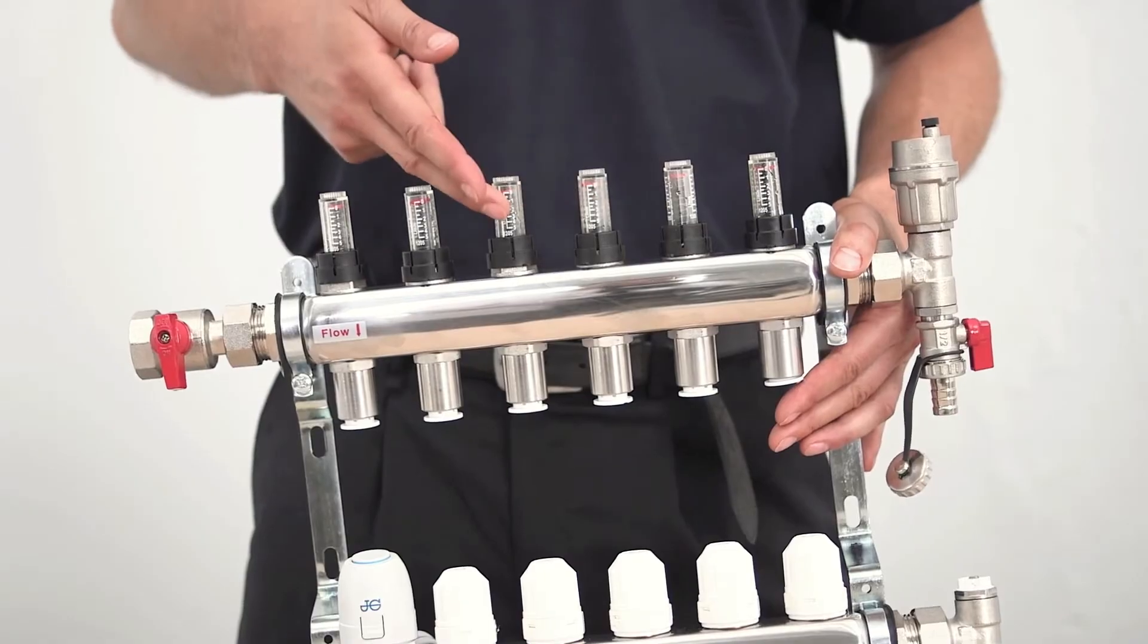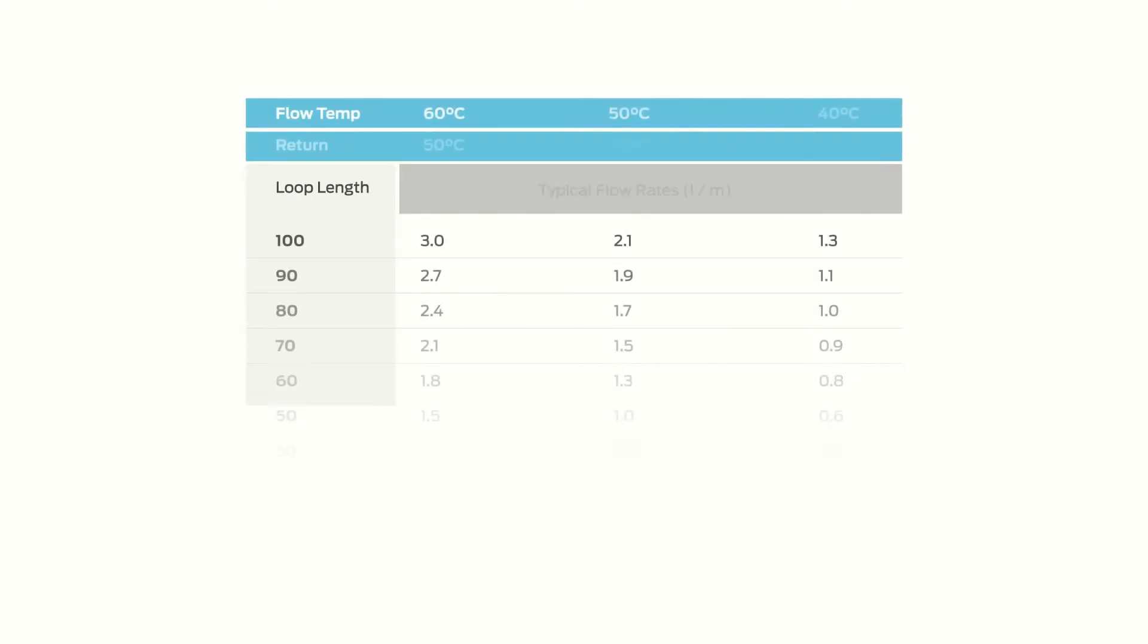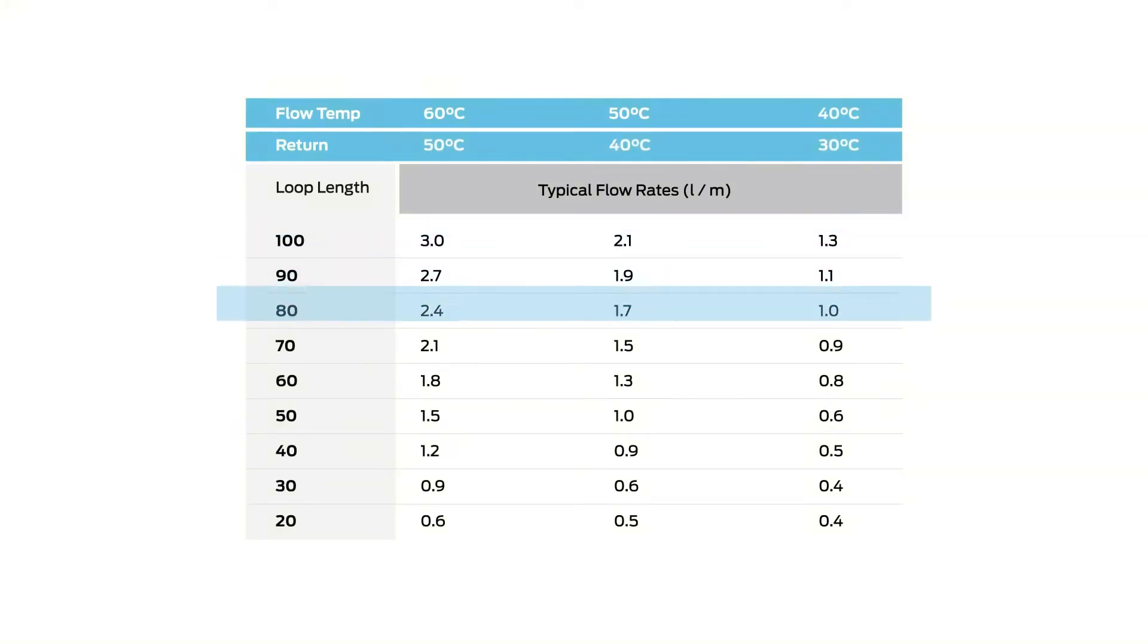The flow meters on top of the manifold give a visual indication of the amount of water flowing through each circuit. The amount of flow needed will depend on the length of the circuit and the temperature drop required. Generally, the shorter the circuit, the more restriction will be needed. This is called balancing the system.